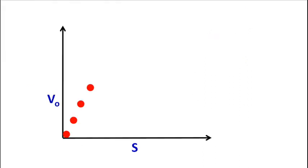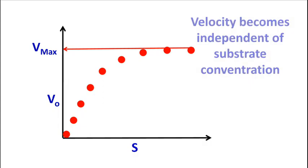For any enzyme catalyzed reaction, the velocity increases up to Vmax. Once Vmax is reached, the velocity becomes independent of substrate concentration, and the graph shows a plateau region.